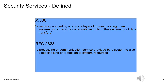Request for Comment 2828, another standard document maintained by the ITU, provides a more clear definition: a processing or communication service provided by a system to give a specific kind of protection to system resources. RFC 2828 talks about implementing services through security enforcement points — those specific kinds of protections — as the implementation of security policies.